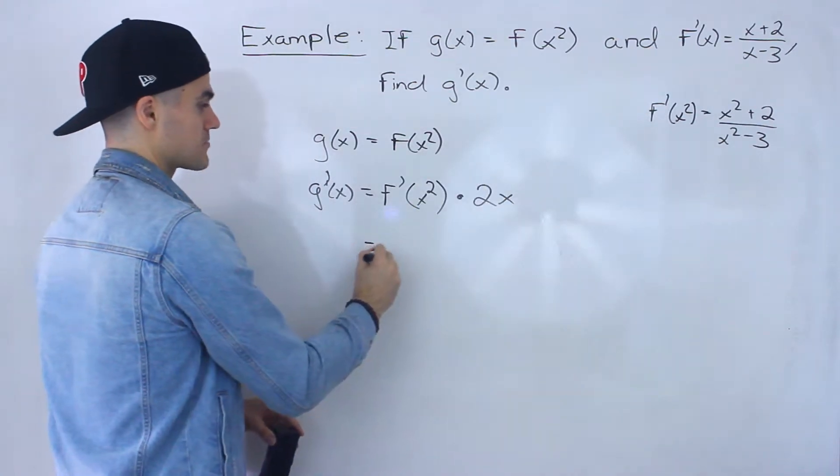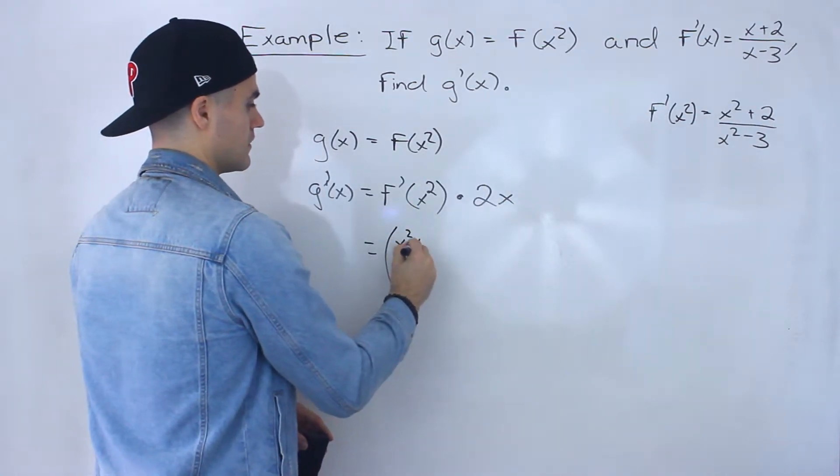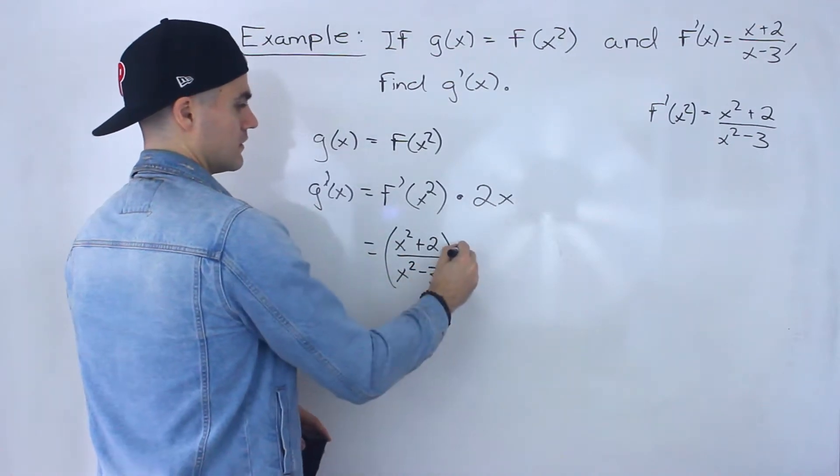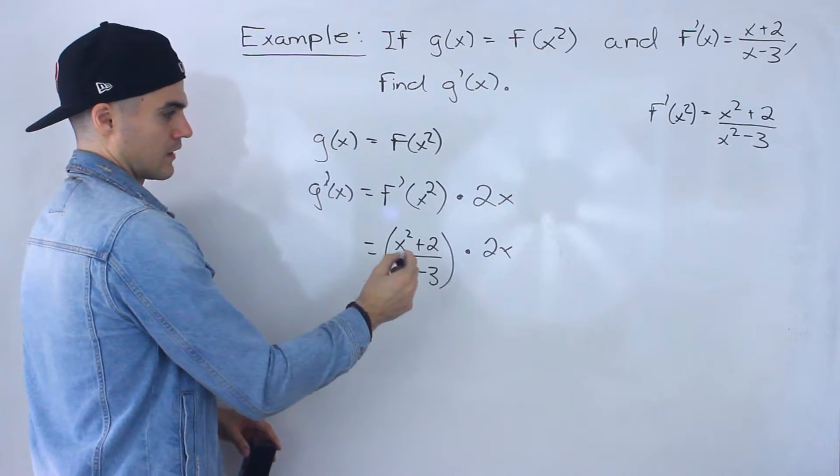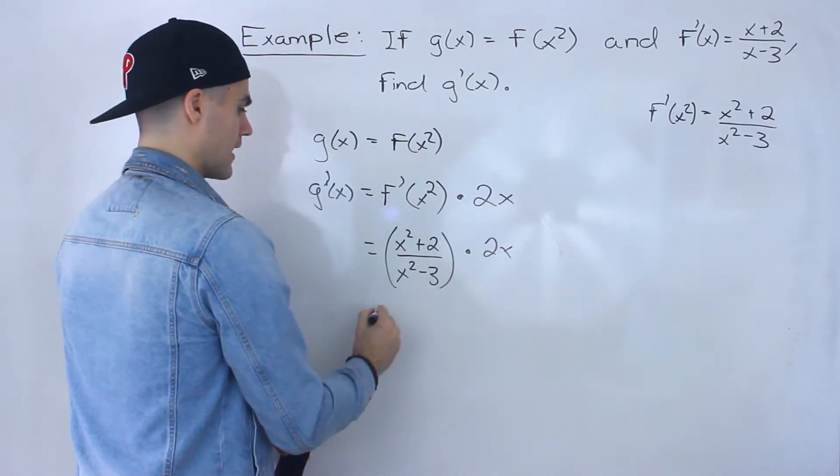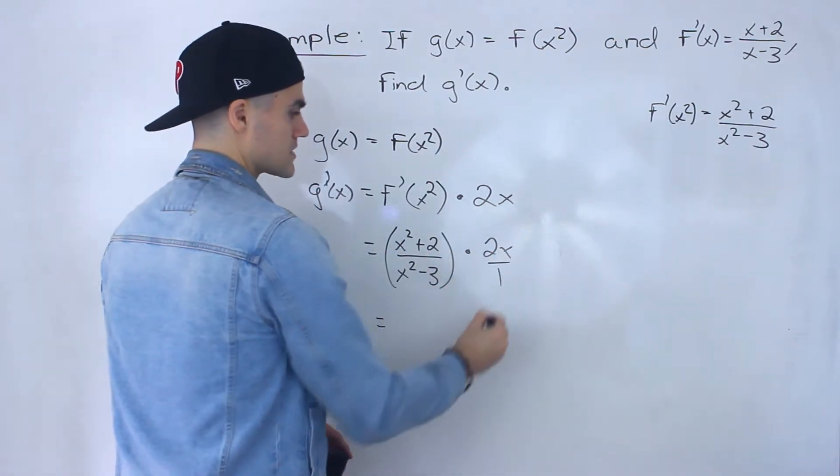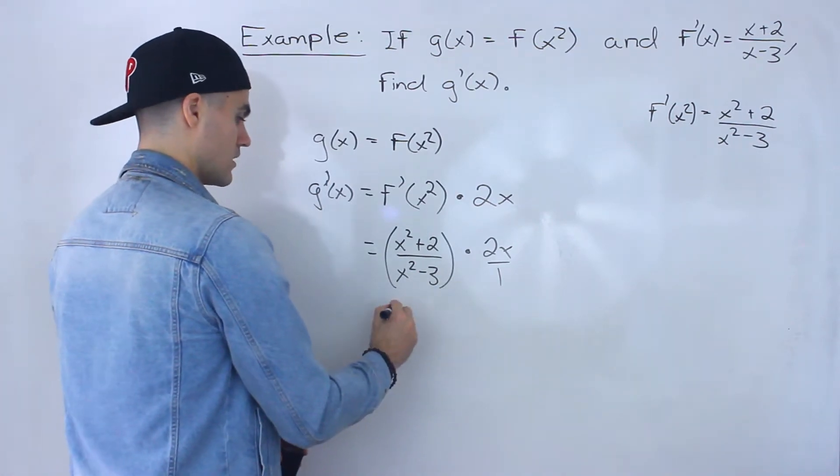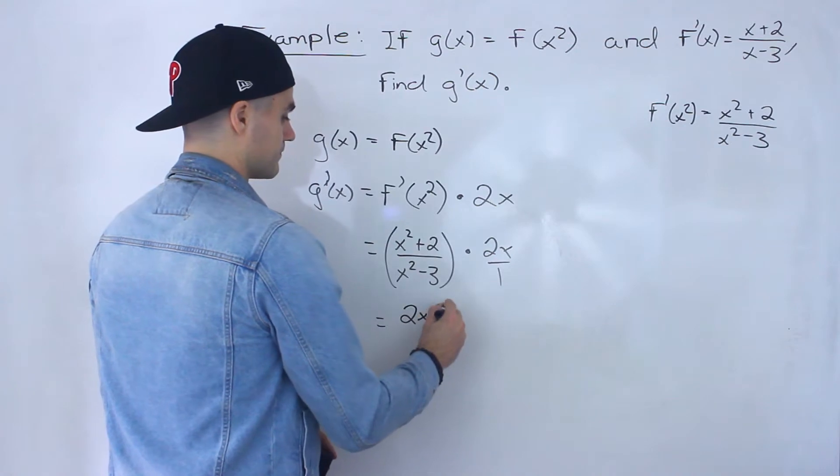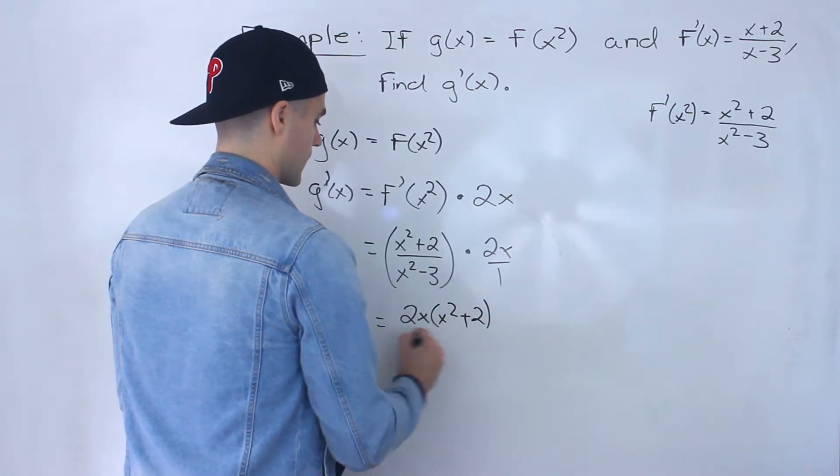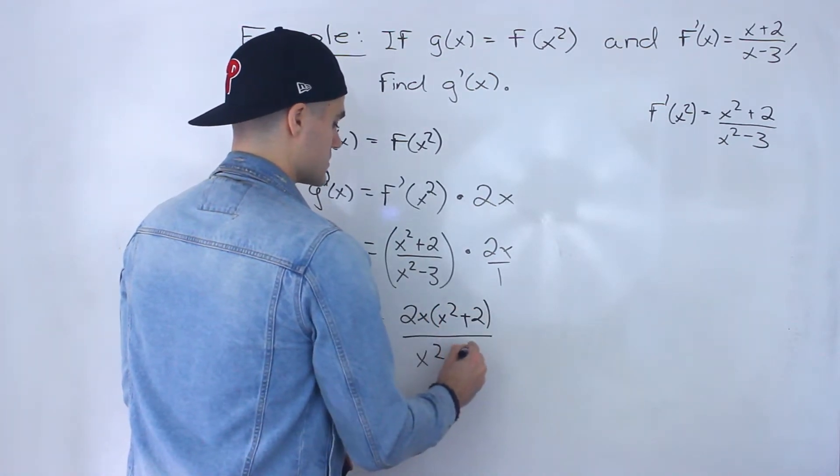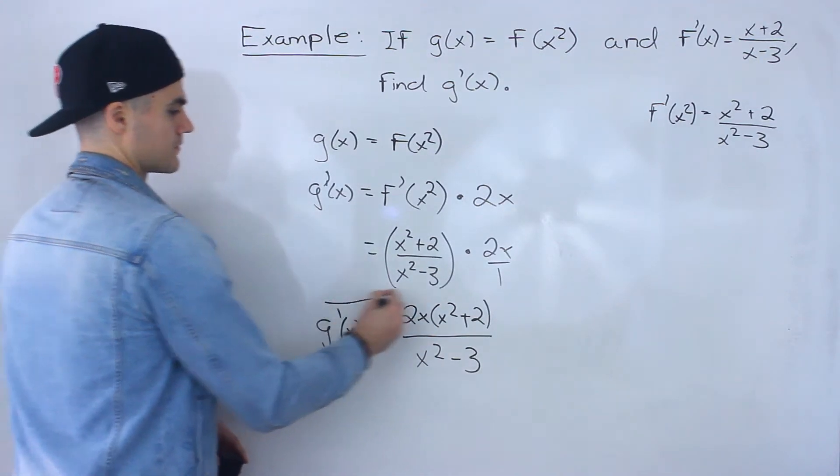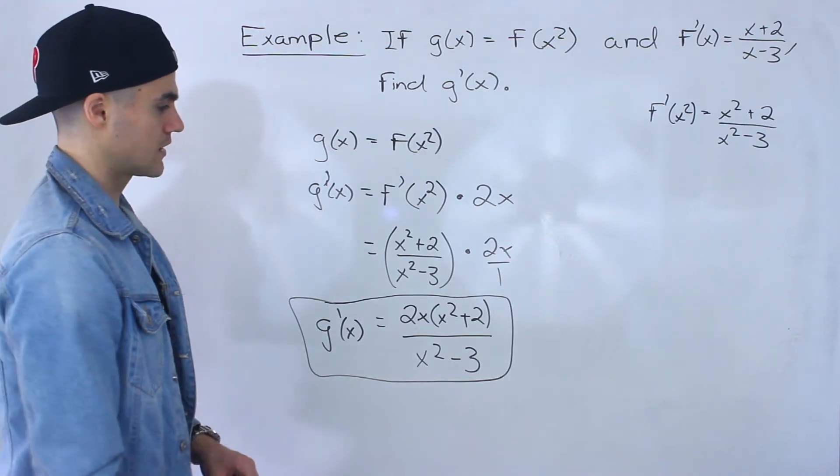And then I got to just take that expression and then plug it in here. And I could take the 2x, multiply it out here with the numerator. This is like 2x over 1, then 1 multiplied by the denominator. And let's just keep it factored up top. So we'd end up with that as an expression for g prime of x. That would be the answer right there.